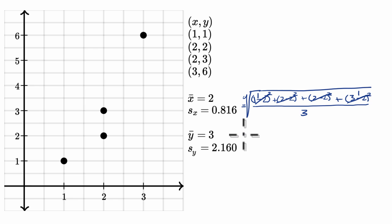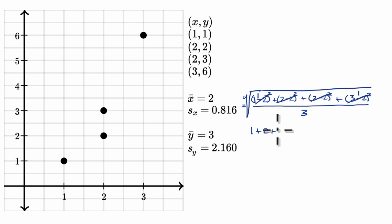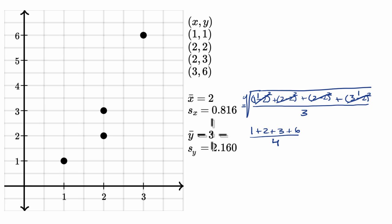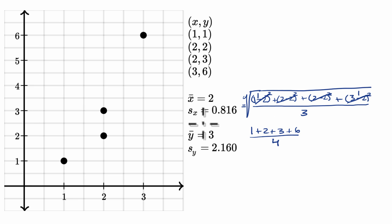The same thing is true for y. The sample mean for y — if you just add up one plus two plus three plus six over four data points — is 12 over four, which is indeed equal to three. And then the sample standard deviation for y, you calculate the exact same way we did it for x, and you get 2.160.